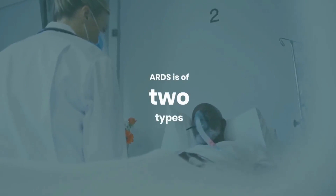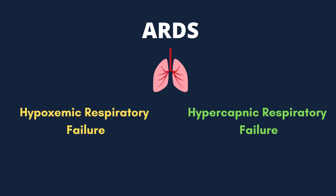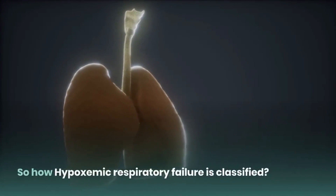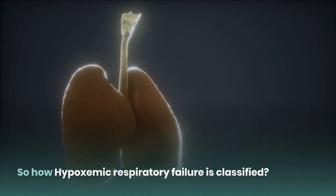Basically, ARDS is of two types: hypoxemic respiratory failure and hypercapnic respiratory failure. If there is hypoxia or reduced PaO2, it is hypoxemic respiratory failure. If the level of PaCO2 in the blood increases, it will be hypercapnic respiratory failure, which we will talk about in the next lesson.